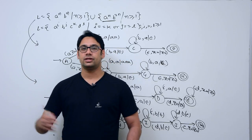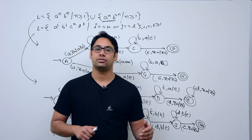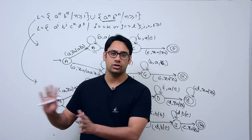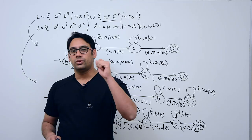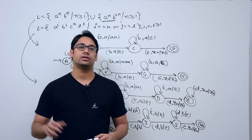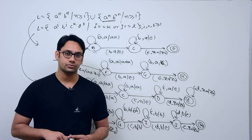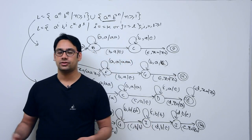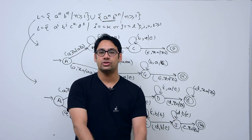Let us move on to some examples of languages where we identify whether a language is regular, context-free, or context-sensitive. Right now we will discuss whether it is a regular language, whether there is a deterministic pushdown automata (deterministic context-free language), or whether a pushdown automata is possible (context-free language). One of the upcoming topics is the pumping lemma, where we identify whether any given language is regular or not.